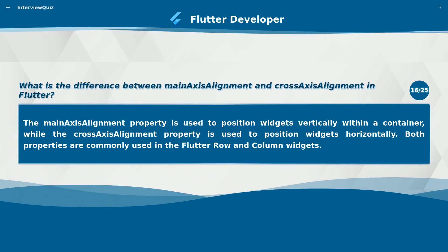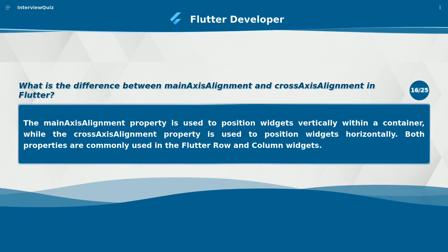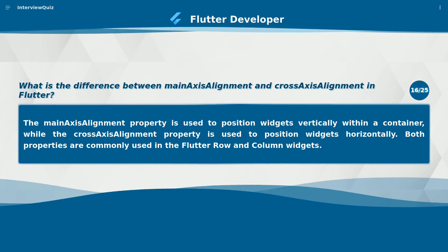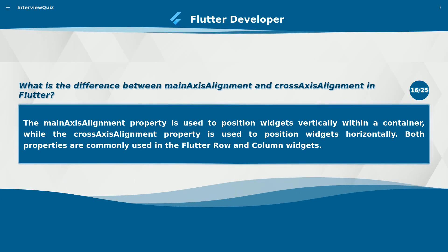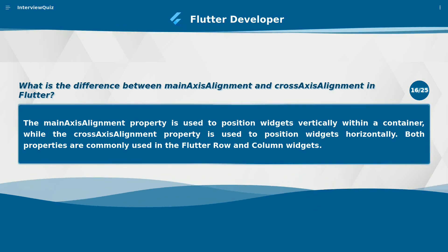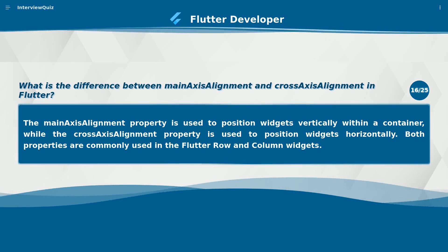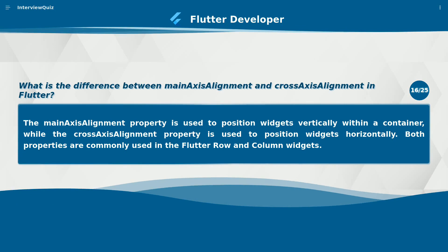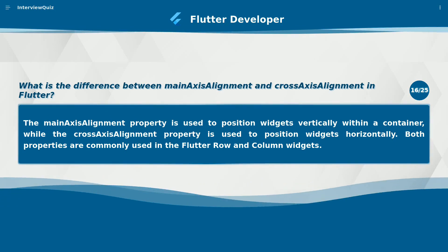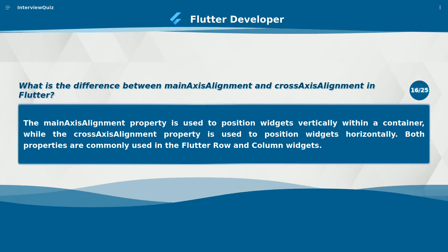What is the difference between MainAxisAlignment and CrossAxisAlignment in Flutter? The MainAxisAlignment property is used to position widgets vertically within a container, while the CrossAxisAlignment property is used to position widgets horizontally. Both properties are commonly used in the Flutter row and column widgets.